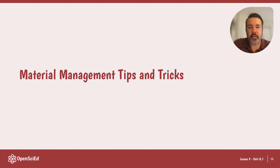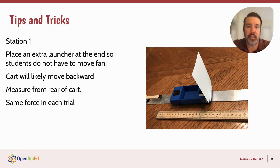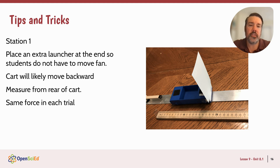Let's talk tips and tricks for the stations. For station one, I personally like to put an extra launcher at the other end. The teacher guide recommends having students move the fan from one side to another, but in my classroom this wasn't feasible with the number of outlets. I found it easier to just leave the fan and have a launcher at the other end — kids launch from both sides and flip the meter stick around. When the cart's going toward the fan, it'll eventually stop and start moving backwards, so focus students on measuring the farthest point the rear of the cart reached. Make sure students use the same force every trial — I told mine to push the launcher to the max, which was 10 newtons.